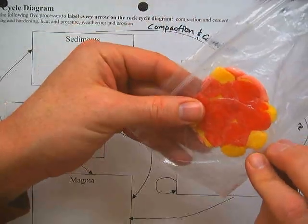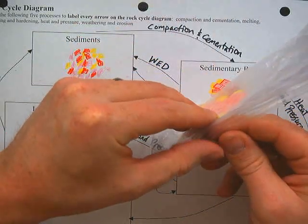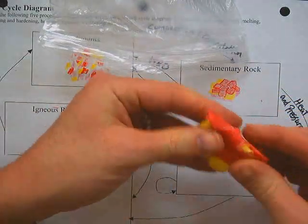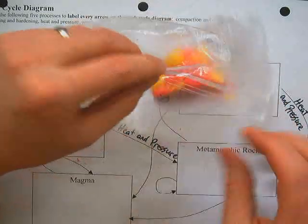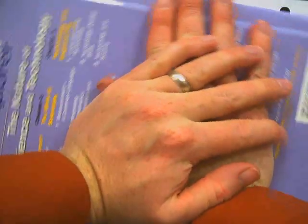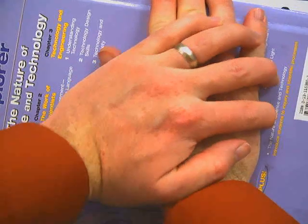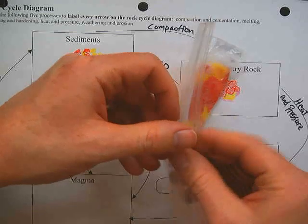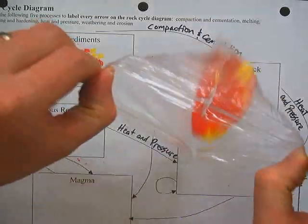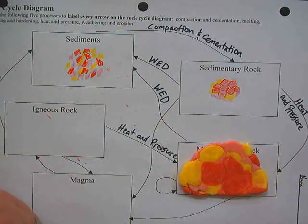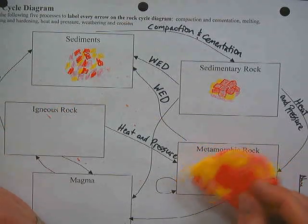Now I can see it's flattened down pretty well. I'm going to take the rock out of the bag, fold it over once, put it back in the bag, and add some more pressure to it to complete the metamorphic rock.